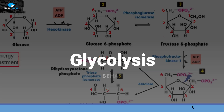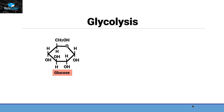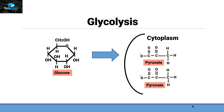Hi friends, this is Sahir from EZBZ and the topic we are going to discuss today is glycolysis. Glycolysis is the first step of both aerobic and anaerobic respiration. In glycolysis, the 6-carbon compound called glucose enters the cytoplasm of the cell where it gets degraded into a 3-carbon compound called pyruvate. This reaction releases two ATP molecules and two NADH molecules.